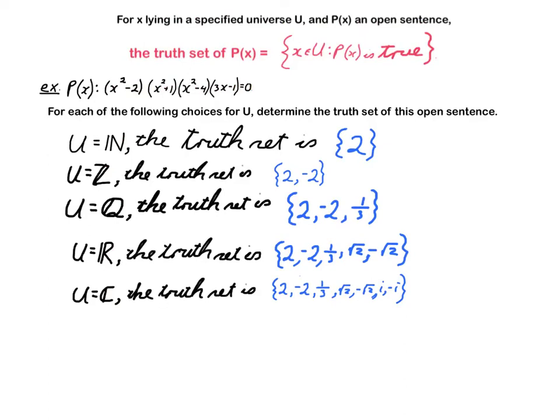All right, so here are my answers. The original open sentence says that (x² - 2)(x³ + 1)(x² - 4)(3x - 1) should be 0. The only way that can happen is if at least one of the factors is 0. The first factor is 0 when x is plus or minus the square root of 2, which is an irrational number. This one is 0 when x is plus or minus the square root of minus 1, that's a complex number. We call it plus or minus i. This one is 0 when x is plus or minus 2. And this one is 0 when x is 1/3.